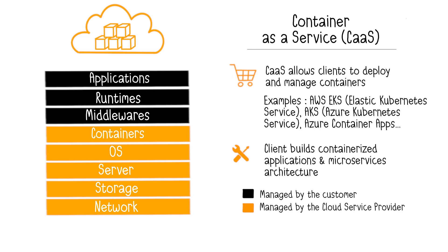Platform as a Service simplifies the application development process. Its goal is to allow deploying an application without needing to worry about the infrastructure required to do so. On the other hand, Container as a Service does not include development tools. Container as a Service only provides tools to deploy and manage containers and the underlying infrastructure. However, your application should be developed separately.